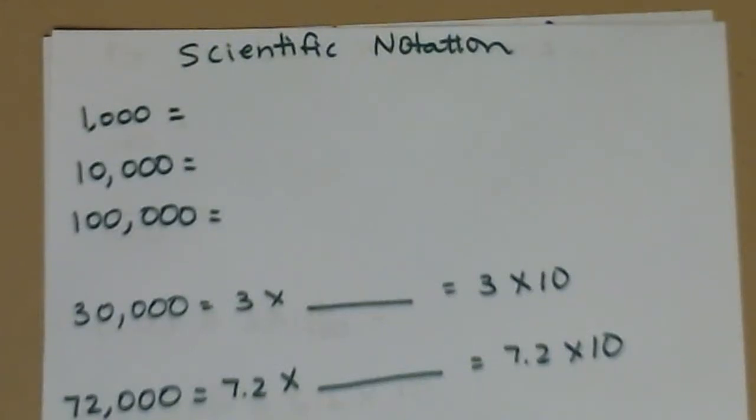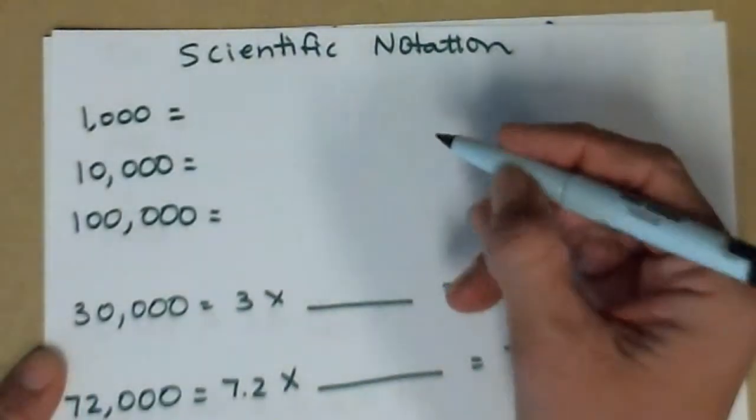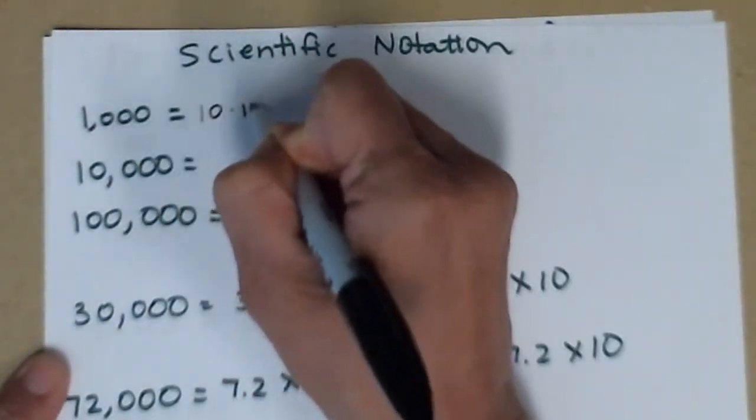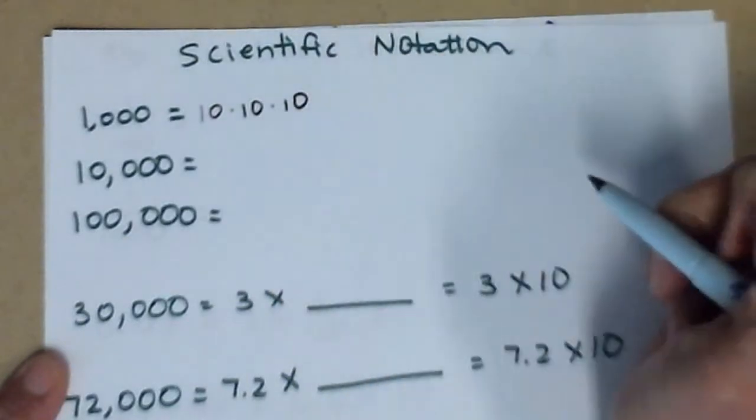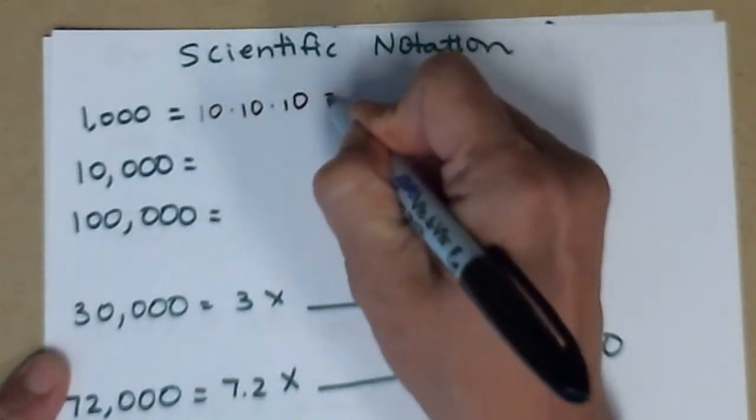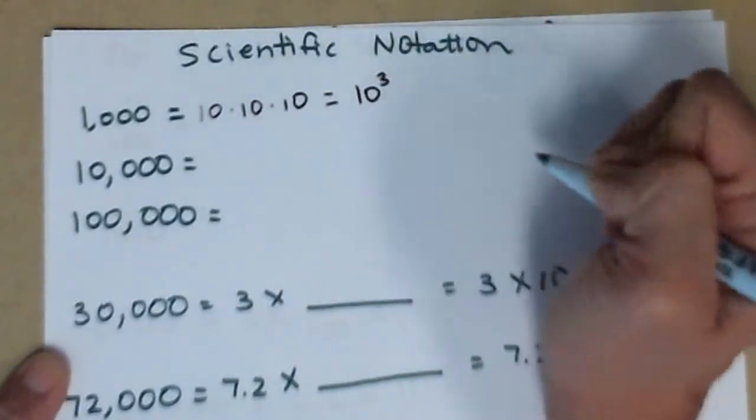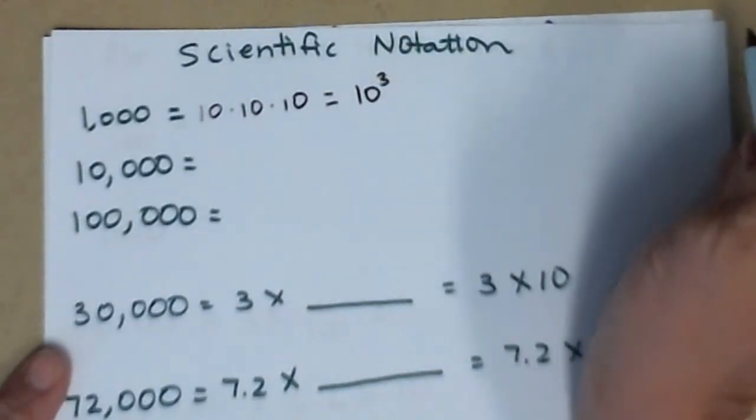I would like to quickly go through some of the basics of scientific notation. One of the first things we need to know is how to write some big numbers. So let's look at 1,000, which isn't all that big, but we can write much simpler. So 1,000 is 10 times 10 times 10. And if we notice that's multiplying the same base three times, we could write that using our exponent properties as 10 cubed.